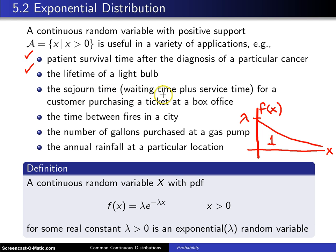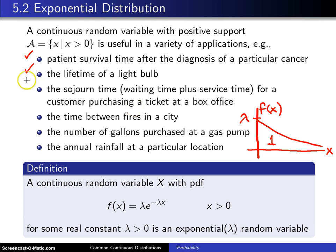Sojourn time — the waiting time plus service time for a customer purchasing a ticket at a box office — could be exponential, but might not be. The service time tends not to be exponential. The waiting time, depending on the type of queue, might be. So this one is a little suspect; I'll put a question mark. I'm not sure if the exponential would do a good job there.